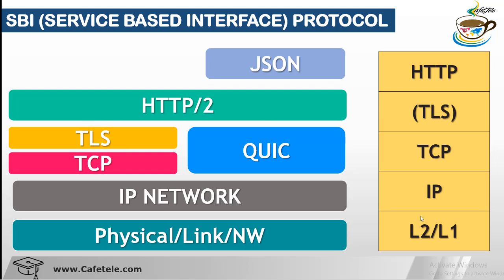On the right side we can see the HTTP protocol architecture. At the top layer we have HTTP, then TLS, then TCP, then IP protocol layer, then L2 and L1. HTTP is a request and response protocol that runs between client and server. This protocol HTTP is carried over TCP to ensure reliable transmission. In HTTP/2 specifically, it is carried over TCP only.